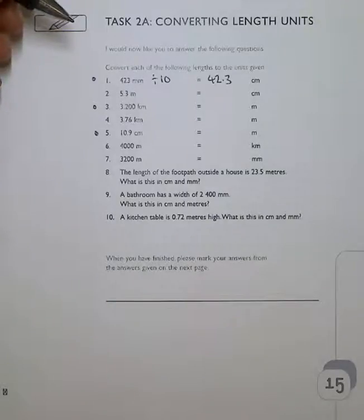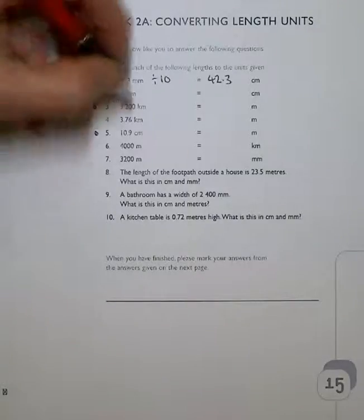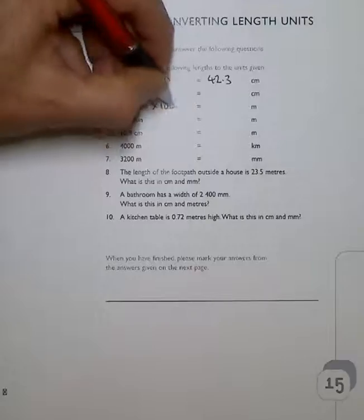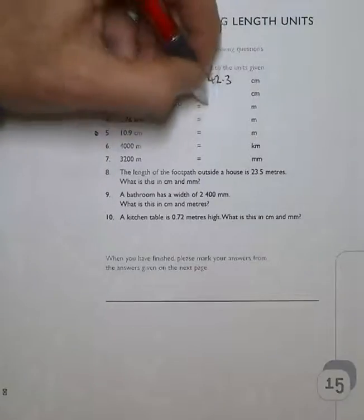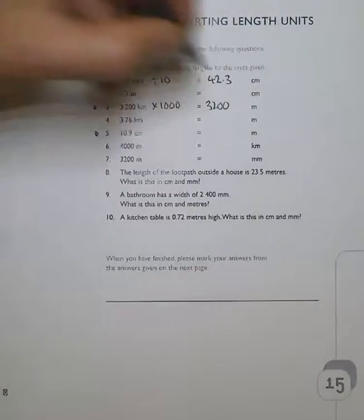Now, kilometers to meters. A kilometer has a thousand meters in it. So 3.2 by that would be 3,200 meters.